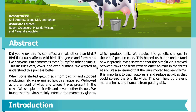We wanted to understand this process better when cows started getting sick from bird flu and stopped producing milk. We examined how this happened, looking at the amount of virus and where it was present in the cows. We sampled their milk and several other tissues, and found that the virus mainly infected the mammary glands, which produce milk.